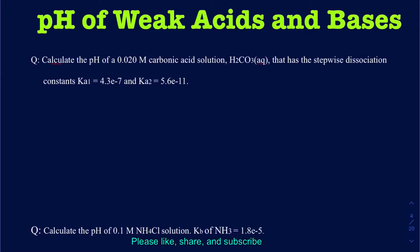So I have a couple of questions here about calculating the pH of weak acids and weak bases. The first one asks to calculate the pH of a 0.02 molar carbonic acid solution, which is H₂CO₃. Remember, this has two protons, so that's going to be a diprotic acid. Diprotic means it's going to have two Ka values. It's got these stepwise dissociation constants — Ka1 is given and Ka2 is given.